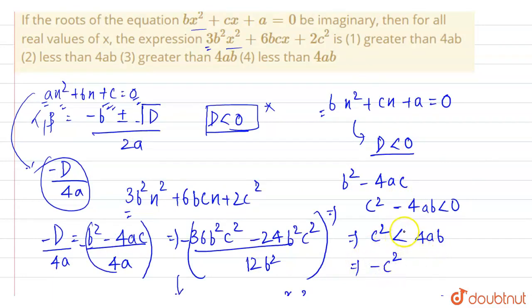So from this we can write multiplying minus from both sides, so this will be minus c square. And note this: whenever we are multiplying a negative sign to an inequality, this will change its sign.